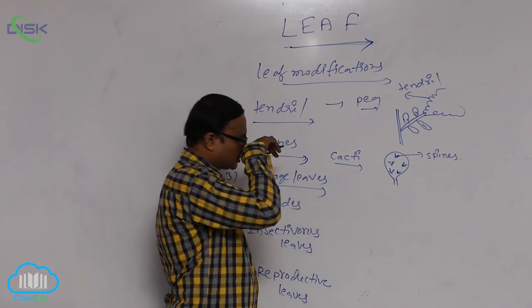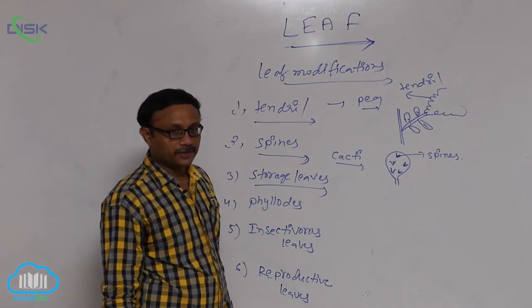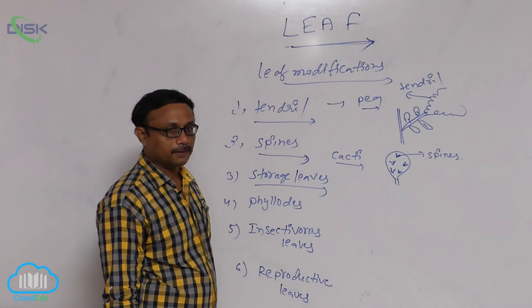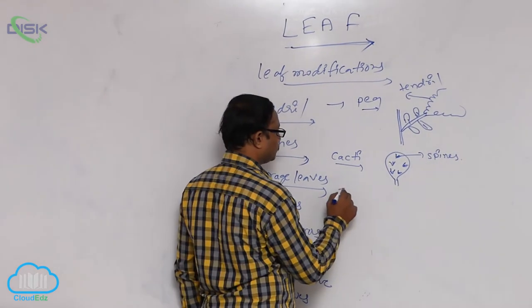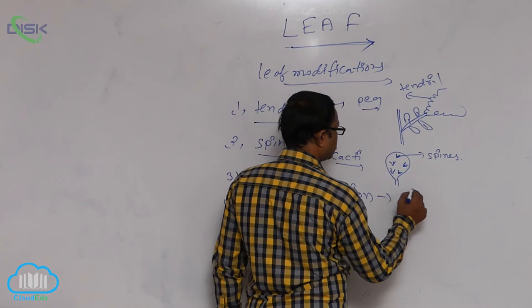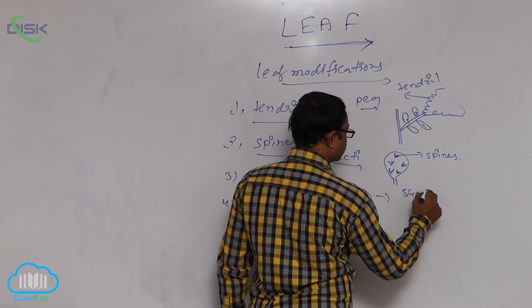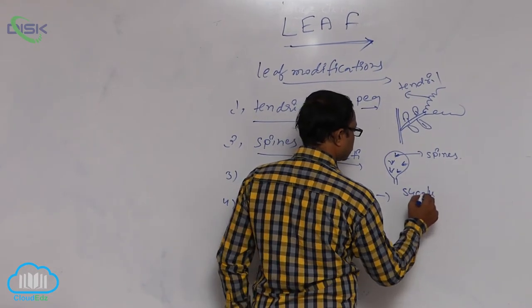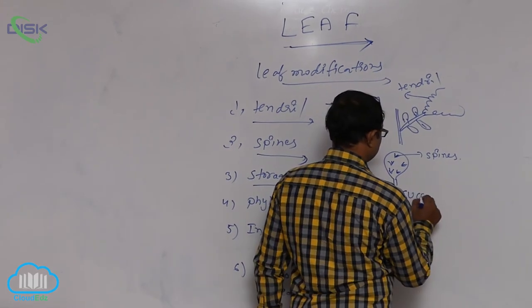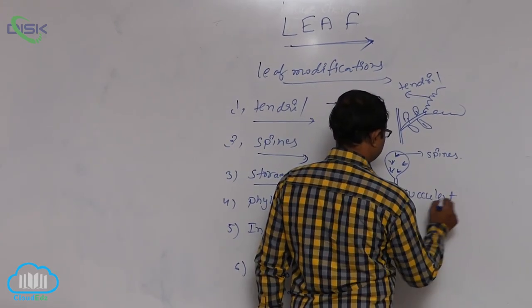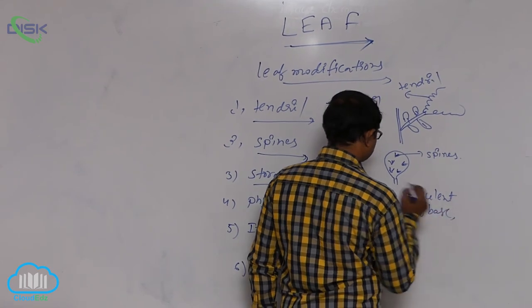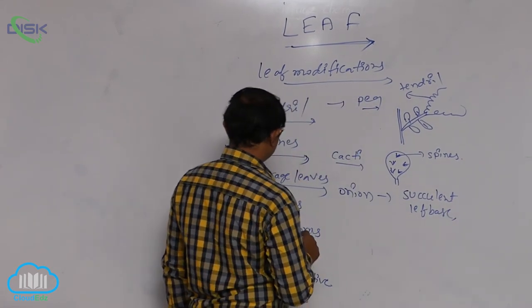Storage leaves. Succulent scale leaves store food material in the bulb. Example: onion. In onion, the succulent leaf base stores food material.